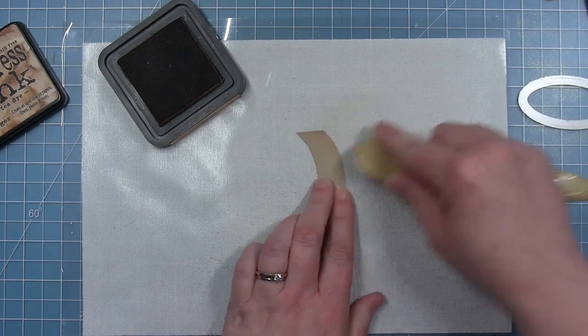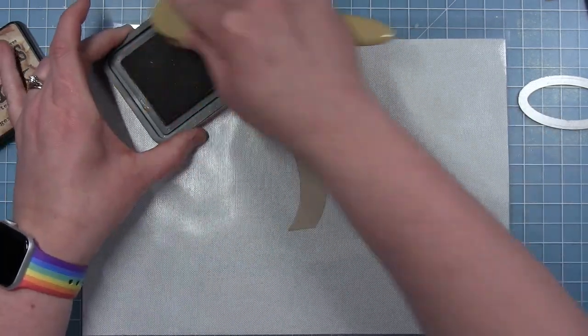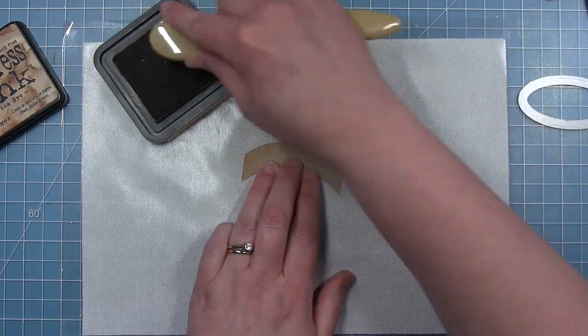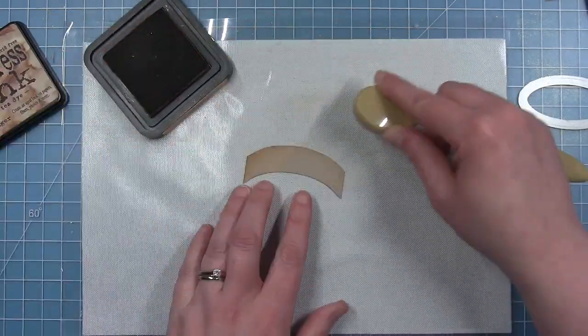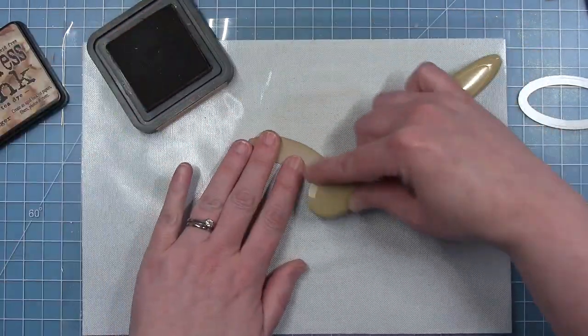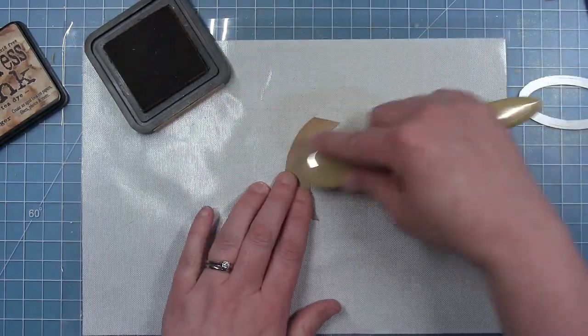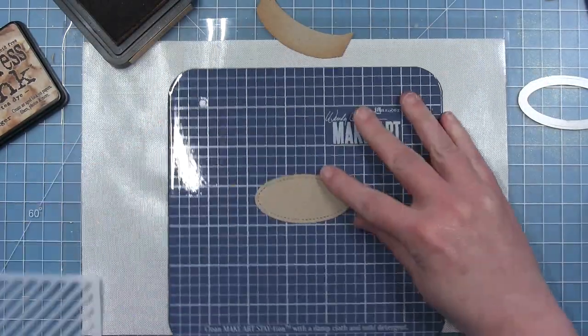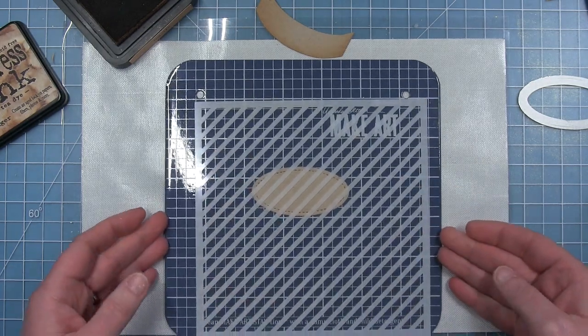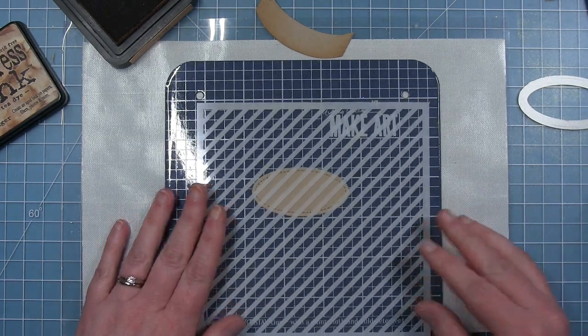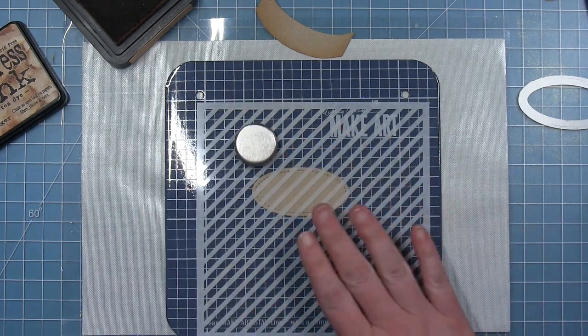I will be using another stitched oval to create this entire basket. I'm going in with distress ink in tea dye to darken up the edges and the bottom and give it some shape so it doesn't look quite so flat.